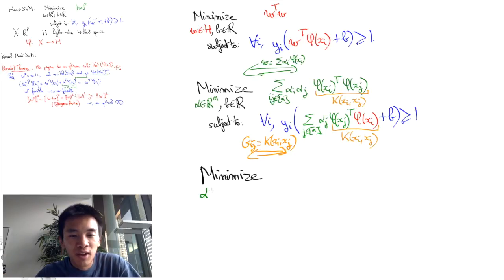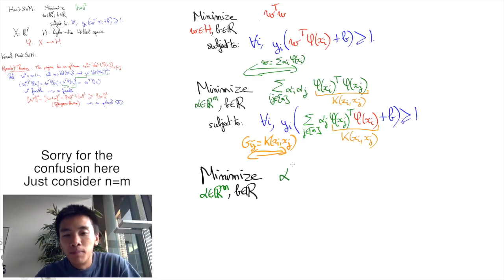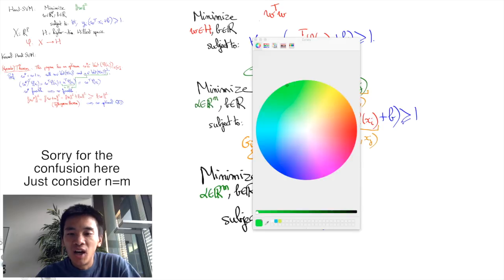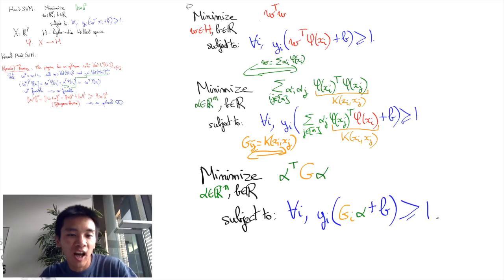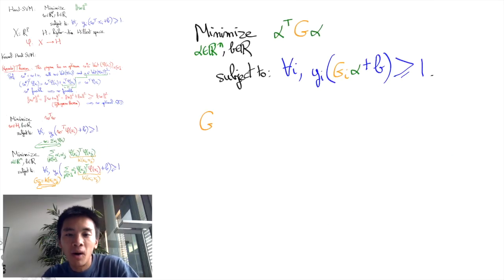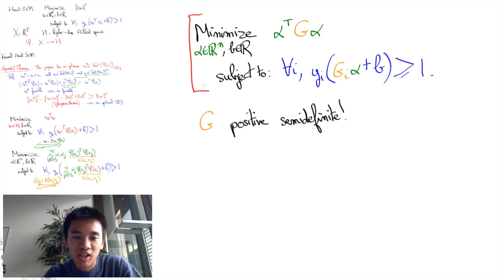In the end we obtain the program: minimize over alpha in R M and B in R, alpha transpose G alpha, subject to yi gi alpha plus B greater or equal to 1. Now it turns out that G has to be by construction a positive semi-definite matrix.